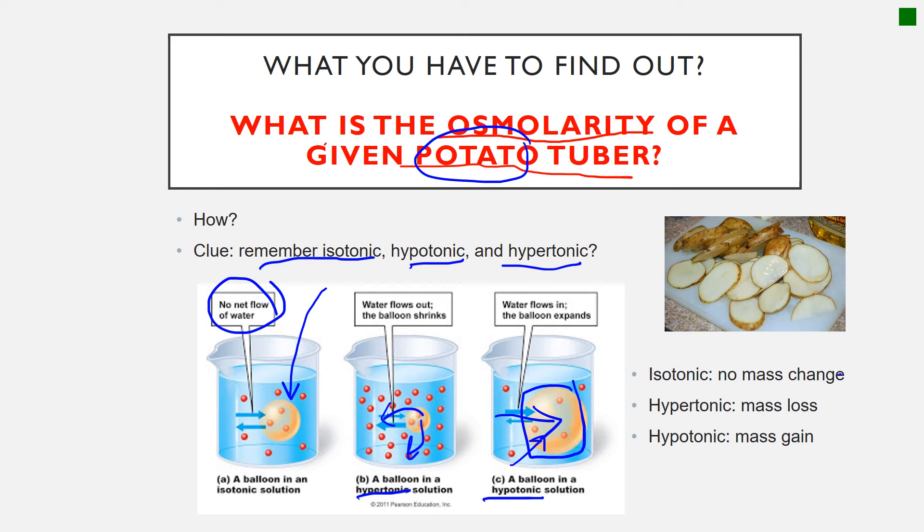Do you got a clue? Again, isotonic, no mass change. Hypertonic, mass loss. In hypotonic, mass will be gained. Do you get any idea how to find out, like a detective, the osmolarity of the potato tuber?